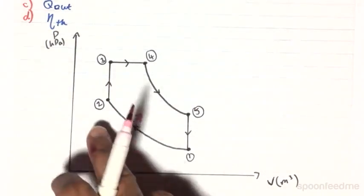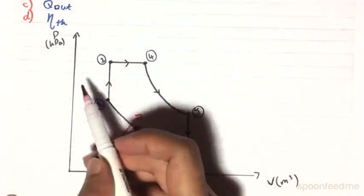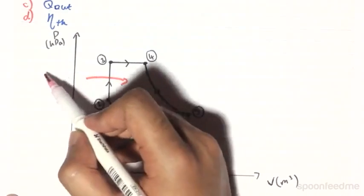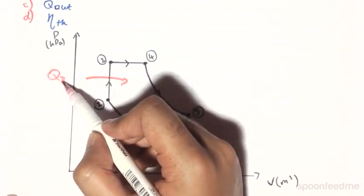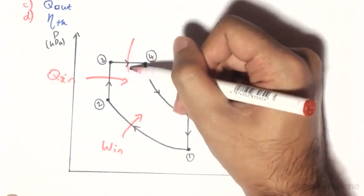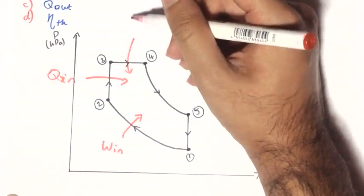There is going to be a Q in at process 2-3, which is an isochoric process. And there is also going to be a Q in at this isobaric 3-4 process.